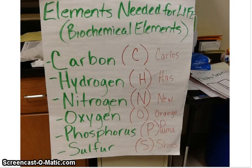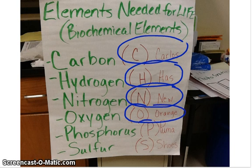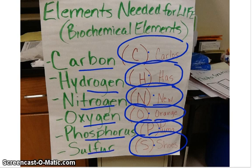They are carbon, hydrogen, nitrogen, oxygen, phosphorus, and sulfur. You need to write this down in your notebook. Over here you'll see I have C for Carlos, H for has, N for new, O for orange, P for puma, S for shoes. That's just a little silly way to help you remember them. Carlos has new orange Puma shoes, or C-H-N-O-P-S, chenops, whatever helps you. Remember carbon, hydrogen, nitrogen, oxygen, phosphorus, and sulfur, the biochemical elements. They're all non-metals.